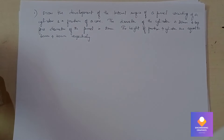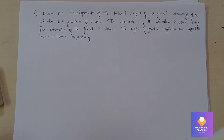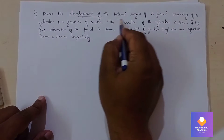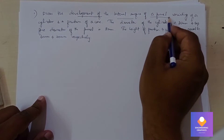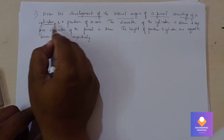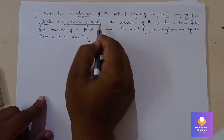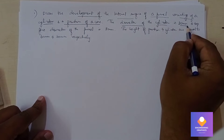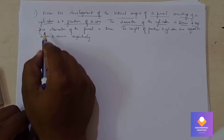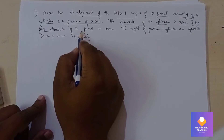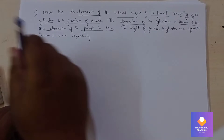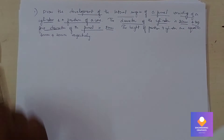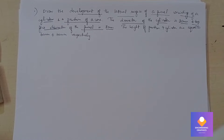Draw the development of the lateral surface of a funnel consisting of a cylinder and a frustum of cone. The diameter of the cylinder is 20 mm, and the top face diameter of the funnel is 80 mm. The height of the frustum and cylinder are equal to 60 and 40 mm respectively.